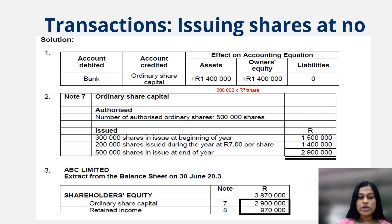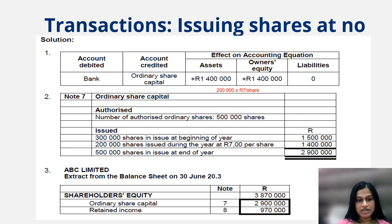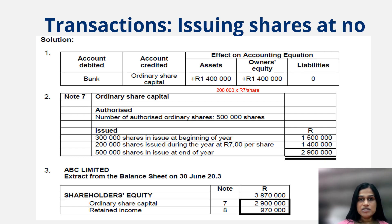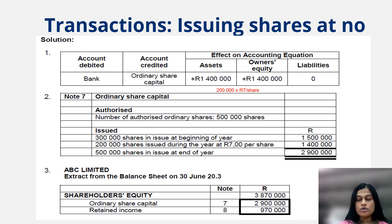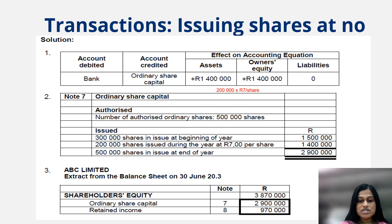Number two asks us to do the ordinary share capital note — generally numbered, here as Note 7, titled 'Ordinary Share Capital'. The note provides two pieces of important information: authorized share capital and issued share capital. The scenario told us the authorized ordinary shares are 500,000 shares, which we state to make known to financial users that the maximum number of shares that can be in issue is 500,000. We then look at the movement in issued shares from the beginning to the end of the year.